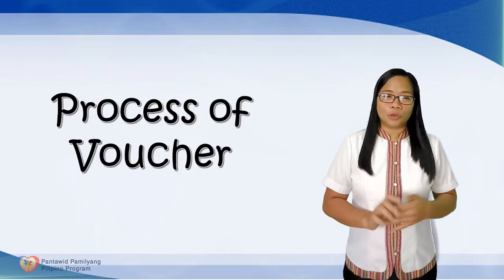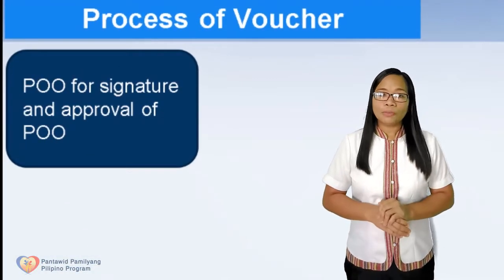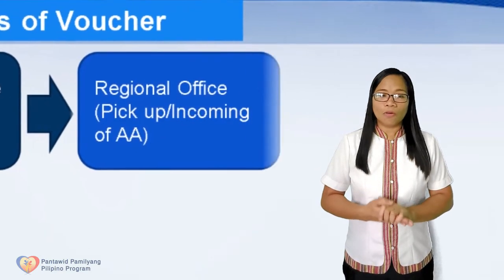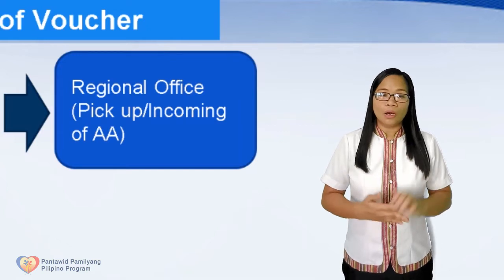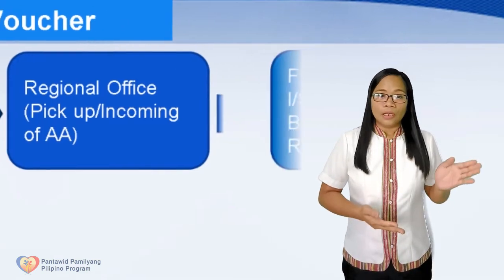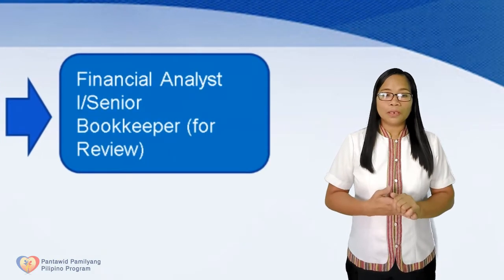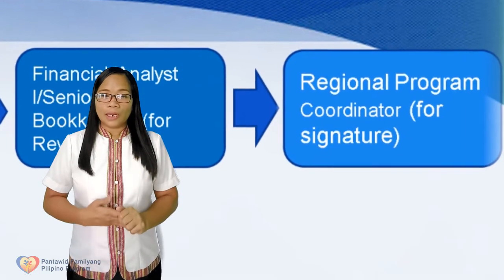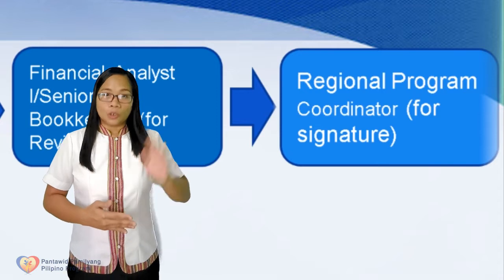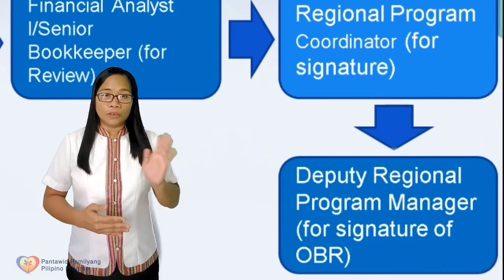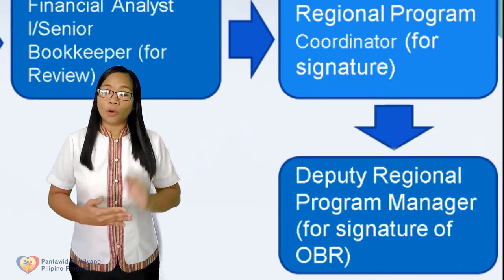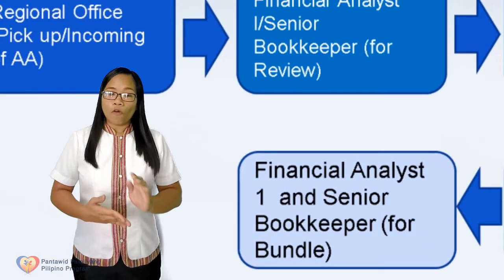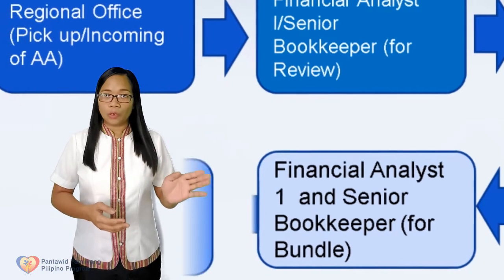Process of Vouchers. From POO, the attachments must be signed by the Provincial League. Then sent to the Regional Office for pick-up and incoming of the assigned staff. Then to Financial Analyst or Senior Bookkeeper for review of the documents. To Regional Program Coordinator for signature. To Deputy Regional Program Coordinator for signature of the Obligation Request or OBR. And return to Financial Analyst or Senior Bookkeeper for bundling. Then out to Budget.